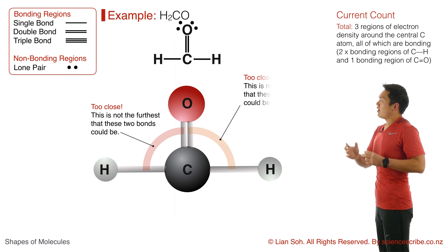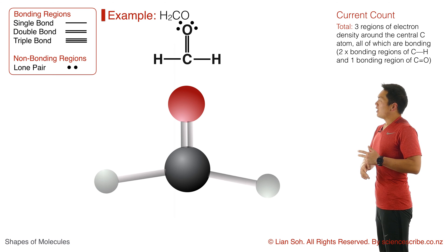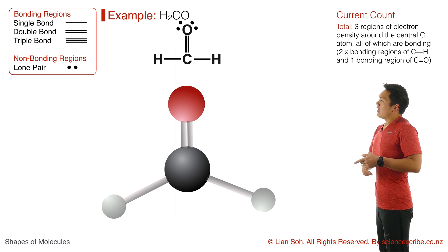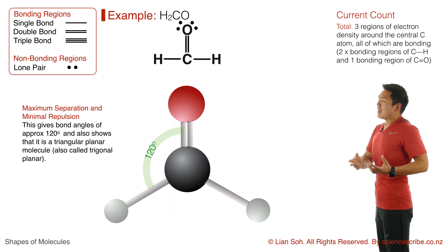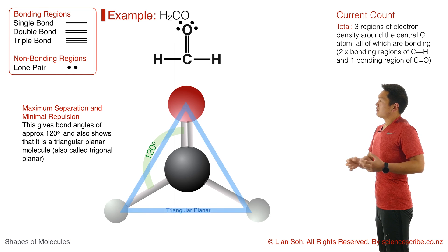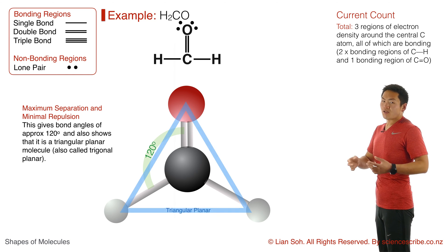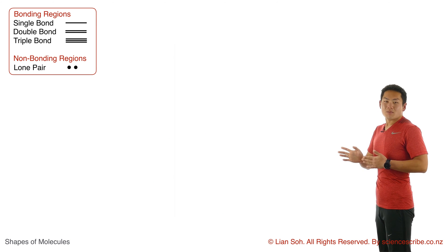When I rearrange these bonds around the central carbon atom, I get a shape that looks like this. Measuring the angles, they're about 120 degrees. I would describe this shape as triangular planar — triangular because it's like the shape of a triangle, and planar because it's a flat molecule.